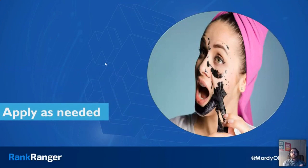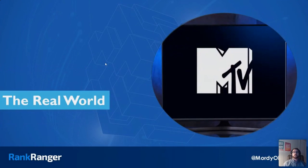The answer is applicability. YMYL niches — health and finance — get hit harder during the core update because they are more applicable to what the core updates are intending to do, to the very purpose and nature of the core updates. In order to show you what that means, I want to go through a particular website and show you how the core updates have played out.